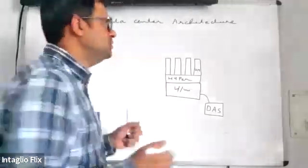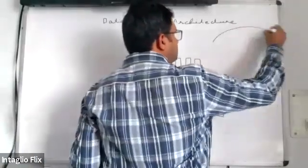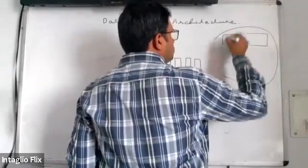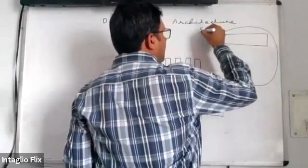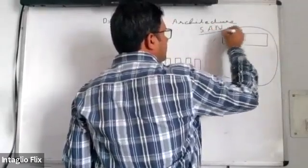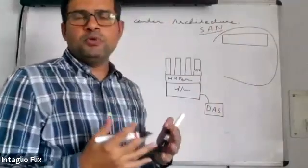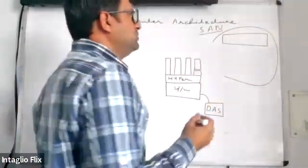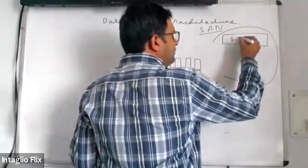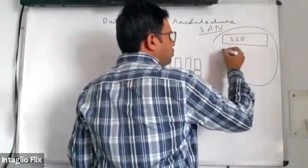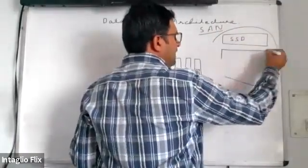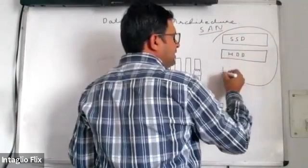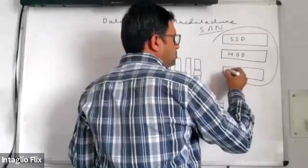In place of DAS, we will be using SAN — Storage Area Network. SAN is a complete area reserved for storage only. Within SAN, we can have different types of storage devices: SSDs (Solid State Drive), HDDs (Hard Disk Drive), and magnetic drives.